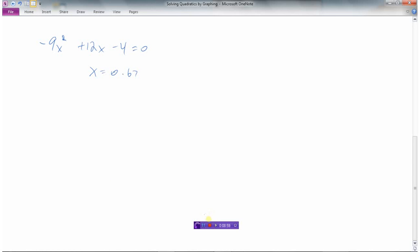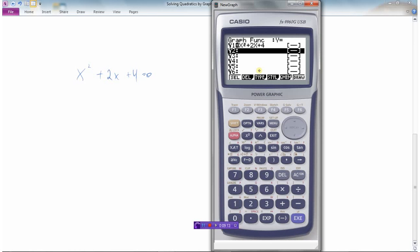Look at one more example here. So this quadratic equation is x squared plus 2x plus 4 equals 0. So we're going to look for some x values that when we substitute them in here would make them equal to 0. We're going to do this by graphing. So I've already got the equation entered here, x squared plus 2x plus 4. So I'm going to draw this.